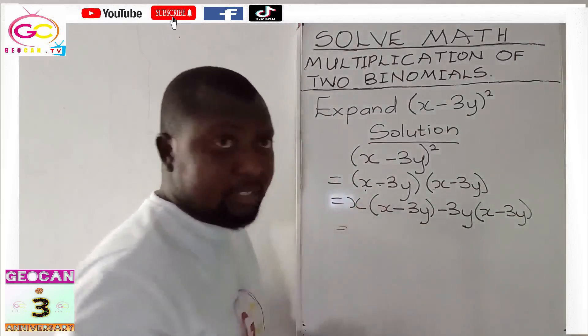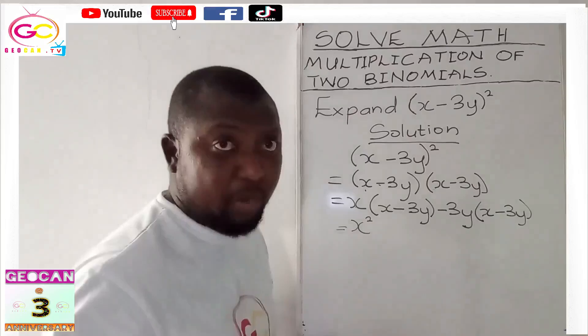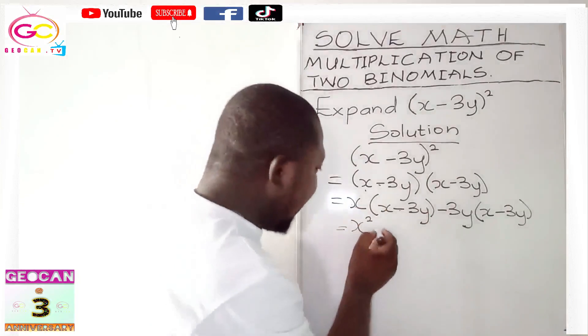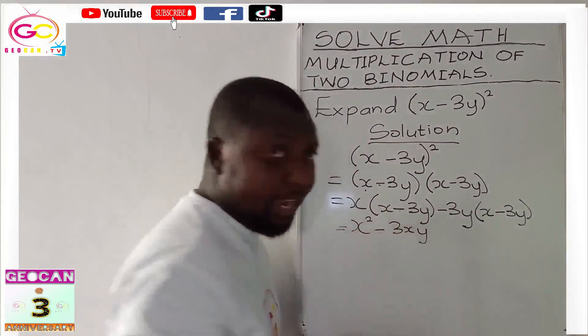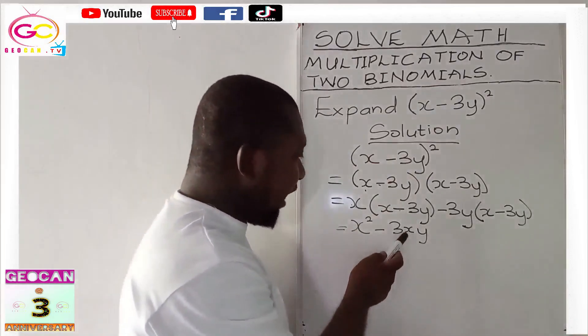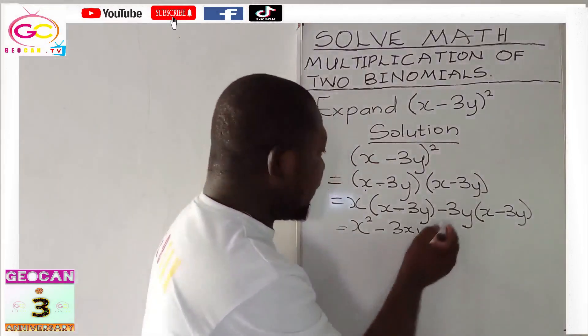Now, x times x, rules of algebra, it becomes x squared or x raised to the power 2. Now, x times negative 3y, rules of algebra, it becomes negative 3xy. Yes, it's arranged alphabetically. That is why the x comes before the y. That's part of rules of algebra.